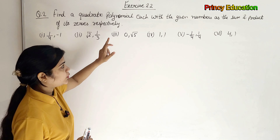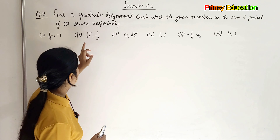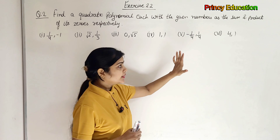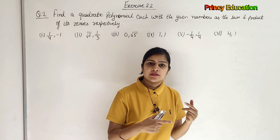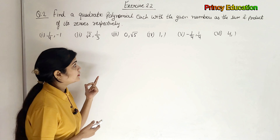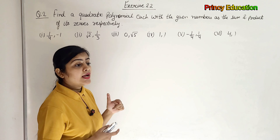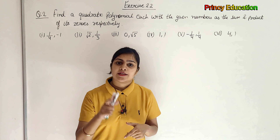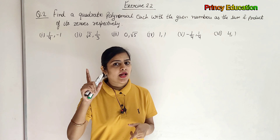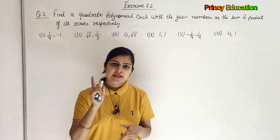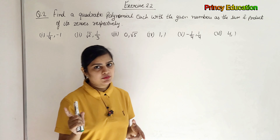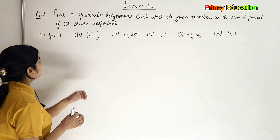Find a quadratic polynomial each with the given numbers as sum and product of its zeroes respectively. So we will see 6 parts. What do you need to find out from 6 parts? Quadratic equations. Now how do we find out the quadratic equation? The basic concept of it I have already explained. Click on the i-tap and you will find a video with the basic concept. I will give you a link at the end of the video. So let's solve it.